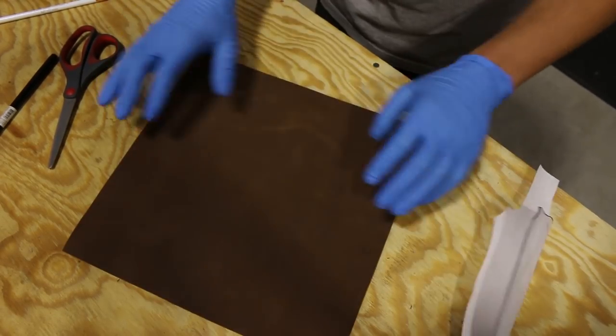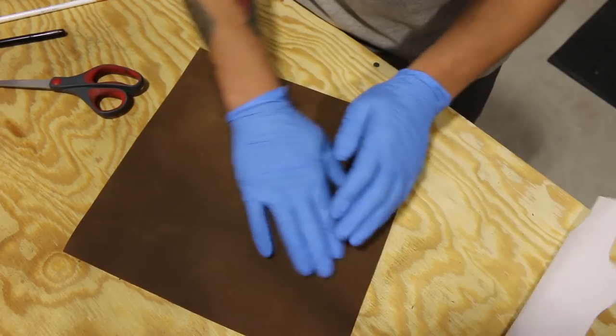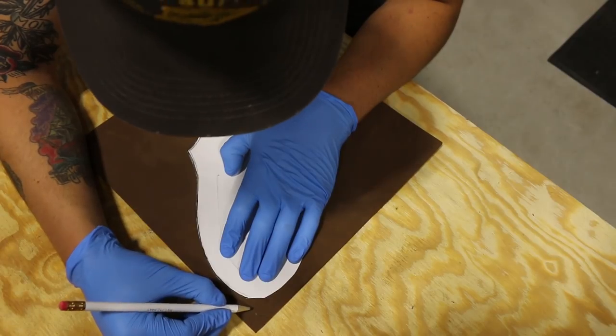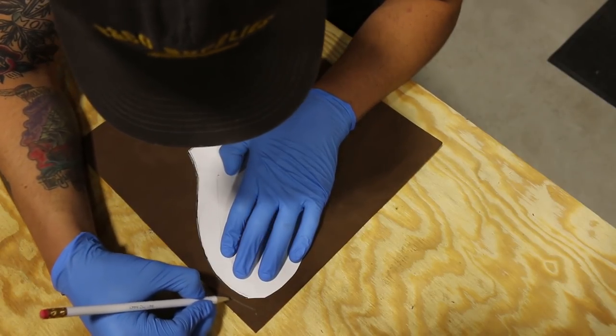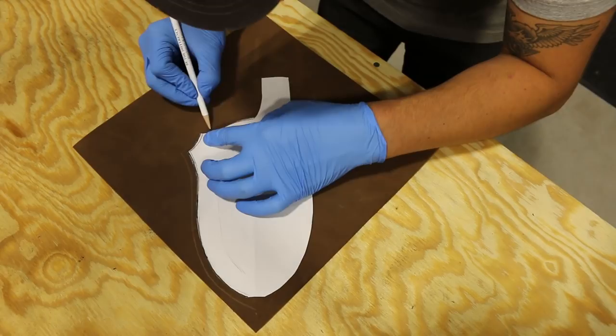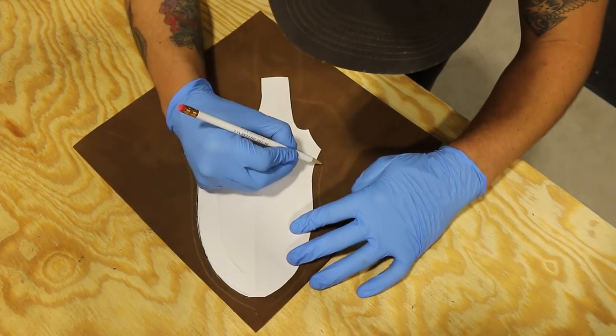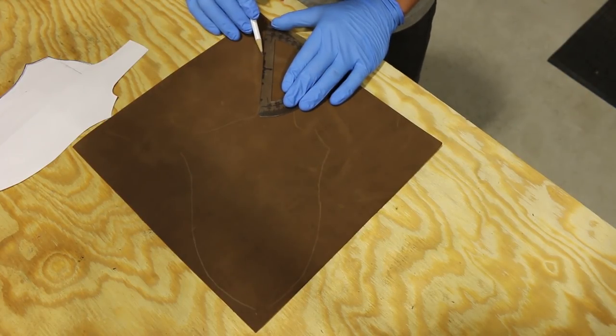Now to transfer this to the leather. I'll be using a piece of pre-dyed 9 ounce leather. I'm tracing a little bit outside the lines to account for any mistakes when I cut this out. I'll be extending the belt loop a few more inches as well.